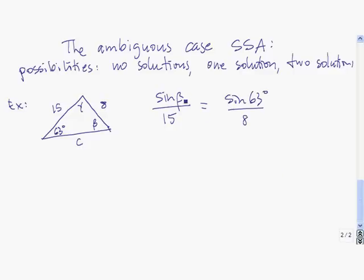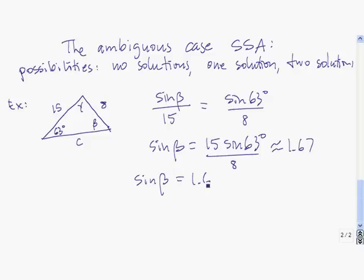To find sine of beta, I multiply both sides by 15. If I plug that into my calculator, I get about 1.67. So to find beta, I need to solve sine of beta equals 1.67. But I know this has no solutions because the highest value that sine of beta can take is 1. So there is no angle beta for which the sine of beta is 1.67.